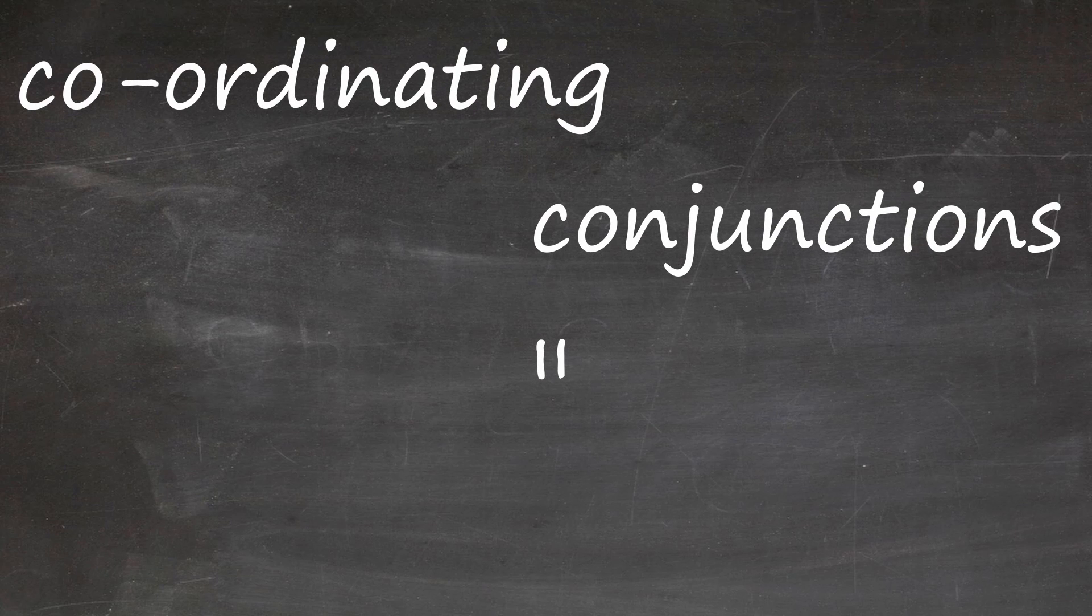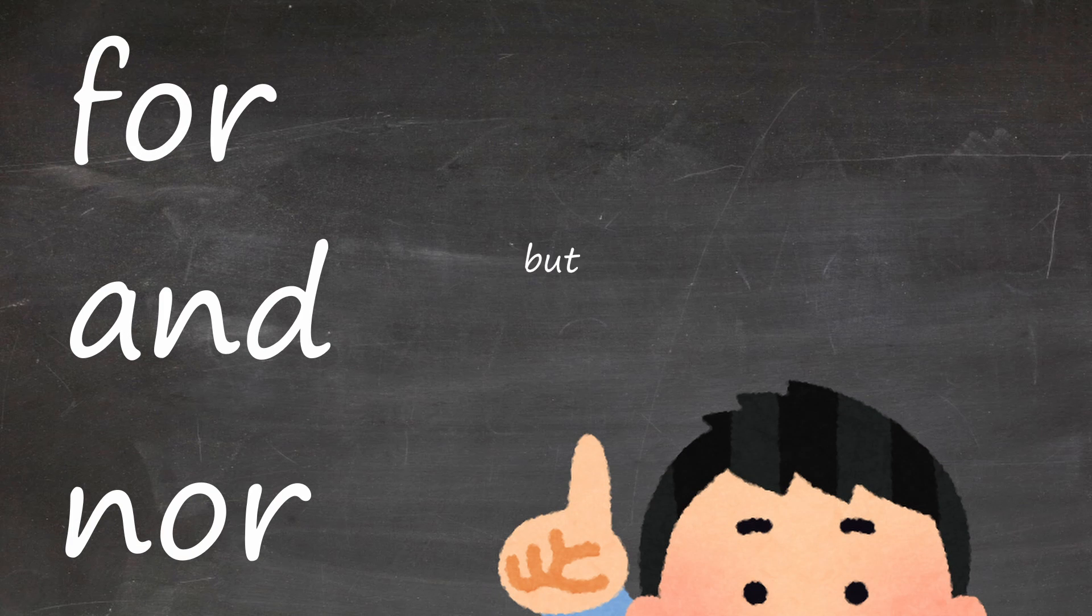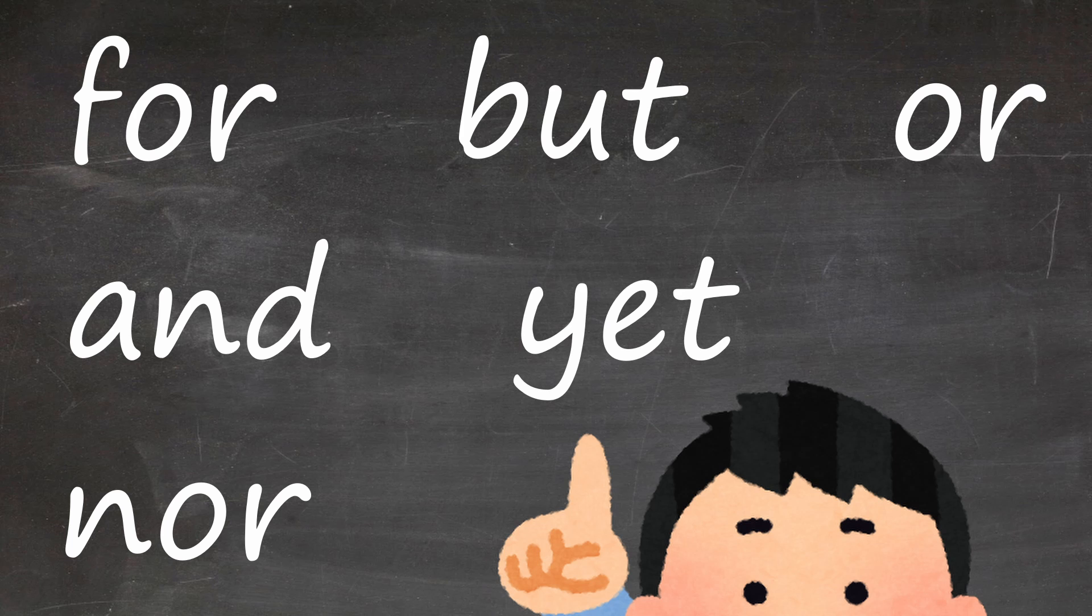Coordinating conjunctions join words and sentences with the same grammatical type. These conjunctions are for, and, nor, but, or, yet, and so.